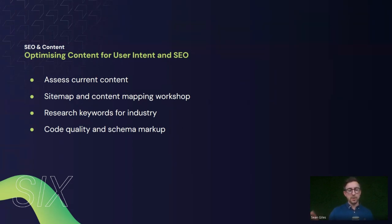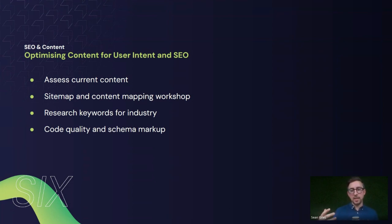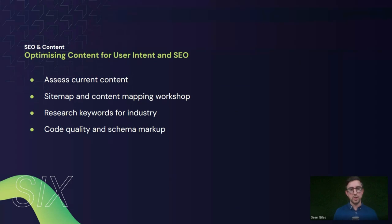Research and keywords for your industry: using tools like SEMrush to understand what people are looking for and the keywords that others haven't caught onto yet, to make sure you're competing in organic traffic. Code quality and schema markup is also really important for SEO. Schema markup is a type of markup or code you put into web pages that can structure the search result in Google, and when Google crawls the website it gives context to the content — helping from a search and SEO perspective.